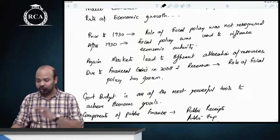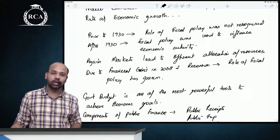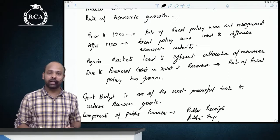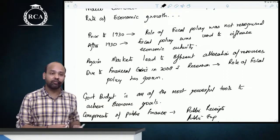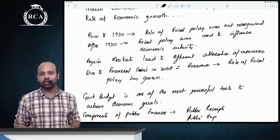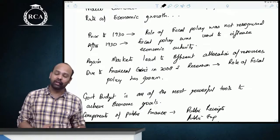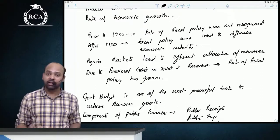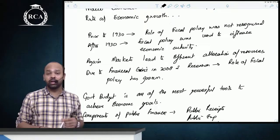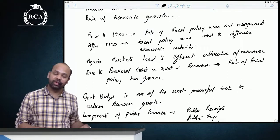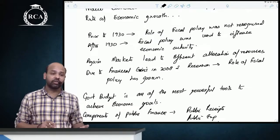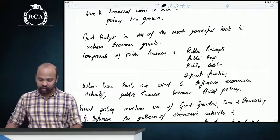Prior to 1930, before the Great Depression, the role of fiscal policy was not recognized. It was only after 1930, when markets were unable to come back to the natural level of real GDP, that people started realizing the importance of fiscal policy. After that, the role of private markets gradually increased, resulting in efficient allocation of resources, and the role of fiscal policy decreased. But in 2008, the financial crisis brought fears of recession and the role of fiscal policy again increased.